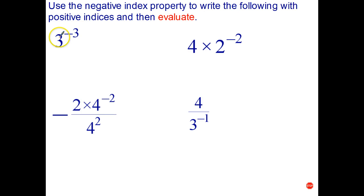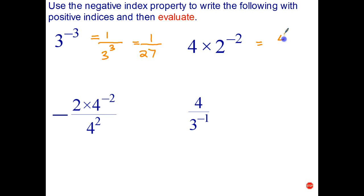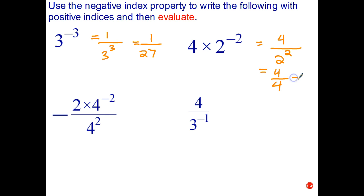Let's see how you went with these. So 3 to the negative 3 is 1 over 3 to the positive 3, which is 1 over 27. 4 times 2 to the negative 2 — the 4 stays on top because we're multiplying, the 2 to the negative 2 goes to the denominator and becomes 2 squared, which is 4. And all of that simplifies to 1.